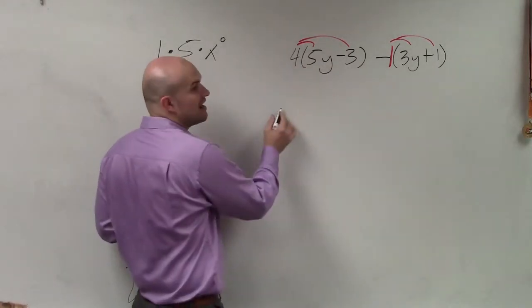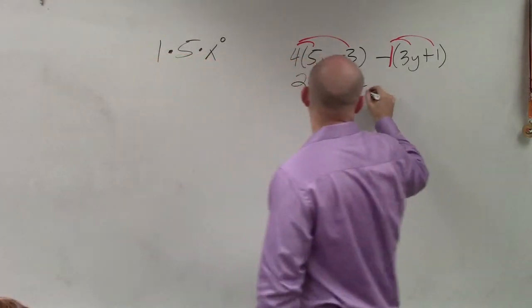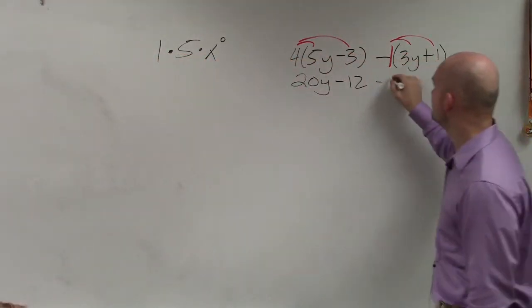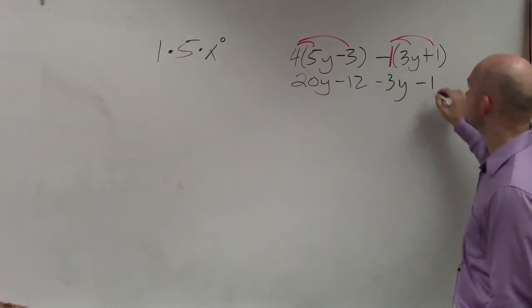So now I just multiply 4 times 5y, again, is going to be 20y. 4 times negative 3 is negative 12. Negative 1 times 3y is negative 3y. Negative 1 times positive 1 is negative 1.